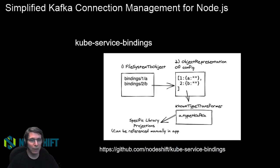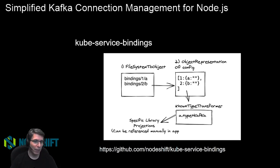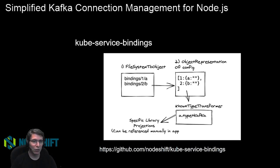That's good, but now you've got to write code that reads those files, pulls all the information together, and figures out the service bindings. Why would you want to do that for every application you deploy? The answer is: you don't. We've put together a module called kube-service-bindings, and it does a number of things in addition to reading those files — it will find service bindings mapped into the environment based on the service bindings root environment variable.